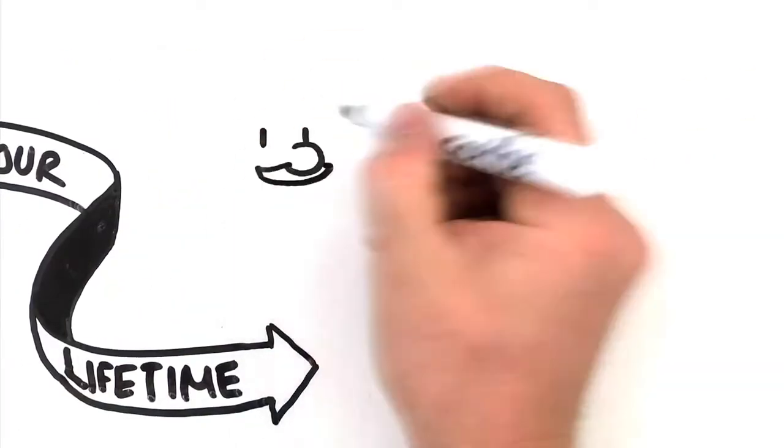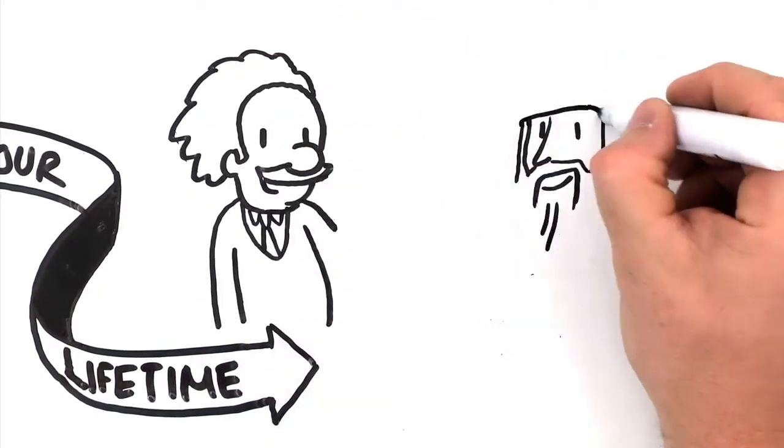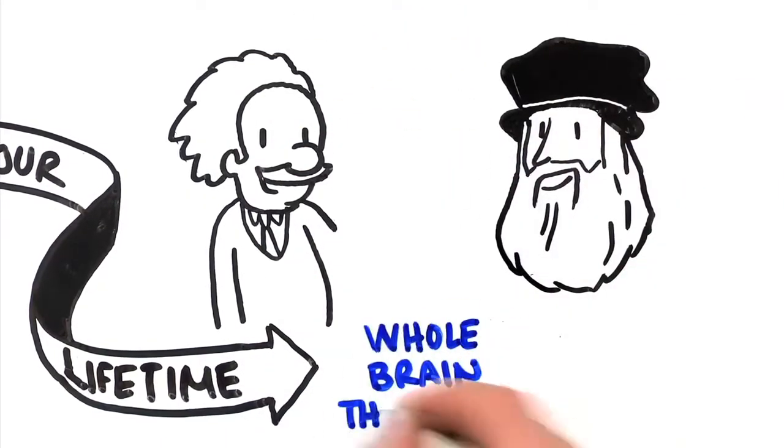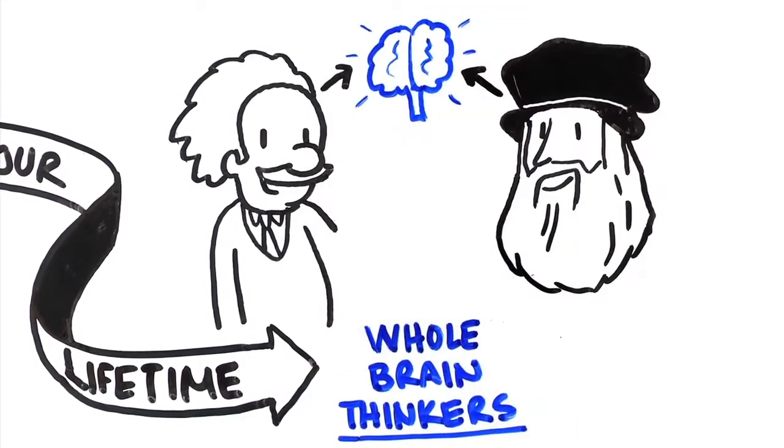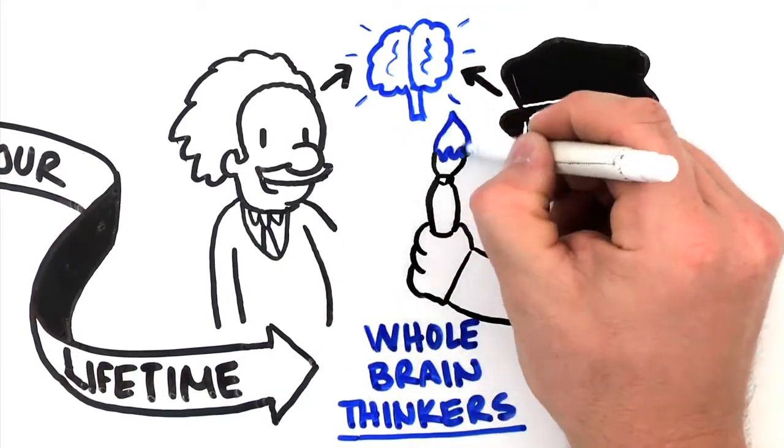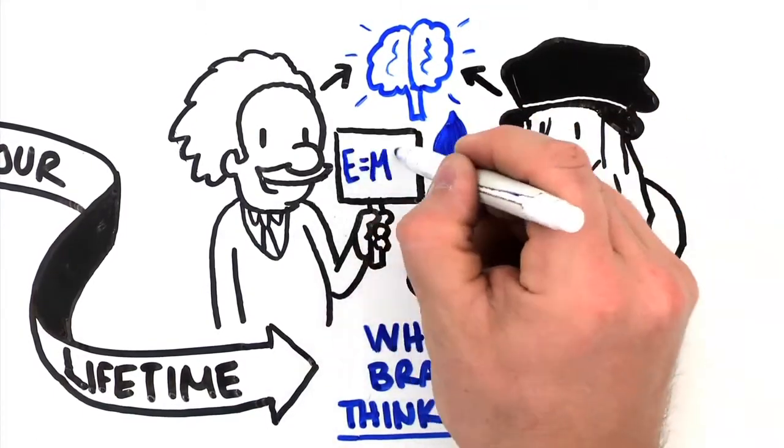Two of the brightest people who ever lived, Albert Einstein and Leonardo da Vinci, were whole brain thinkers, tapping into their brain's enormous capacity for both creative expression and logical problem solving.